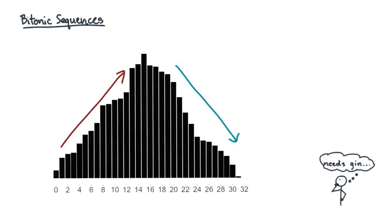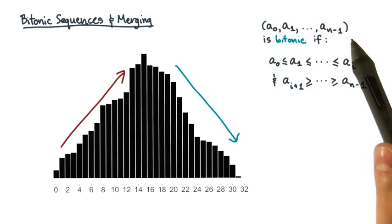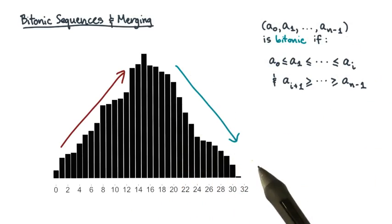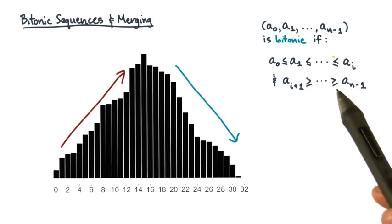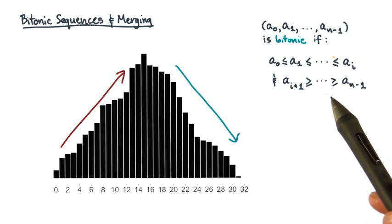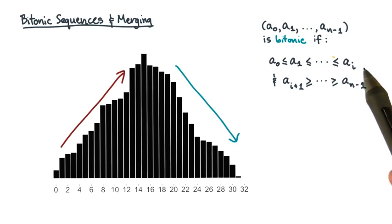Here's a more formal definition. A sequence of values is bitonic if it goes up and then goes down. To be a little bit more precise, the less than or equal to signs and greater than or equal to signs indicate that a bitonic sequence is initially non-decreasing and then becomes non-increasing.